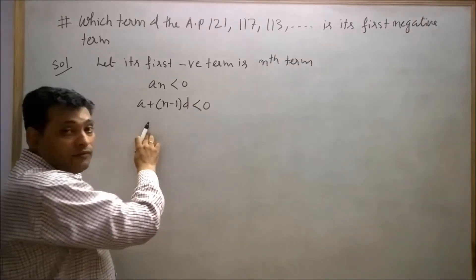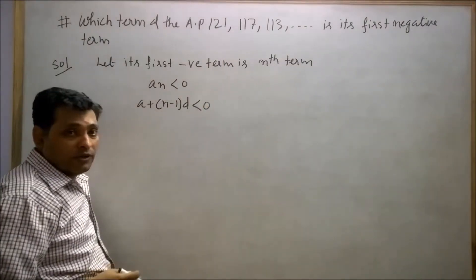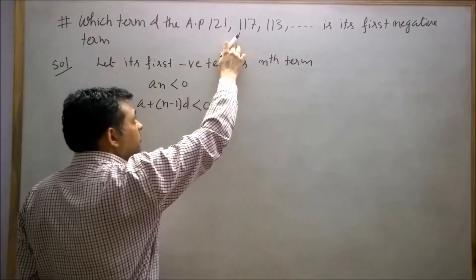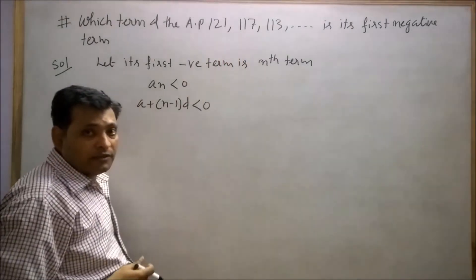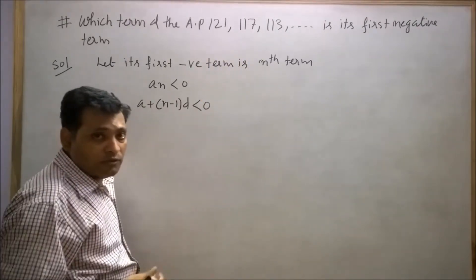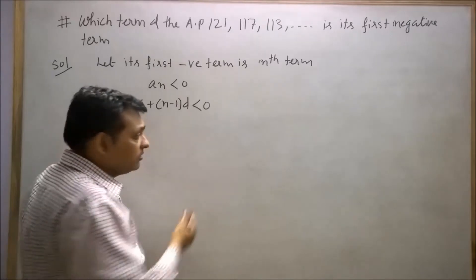Here the first term is 121 and the common difference between any two consecutive terms is -4. If we subtract 121 from 117, we get -4. So its common difference is -4.